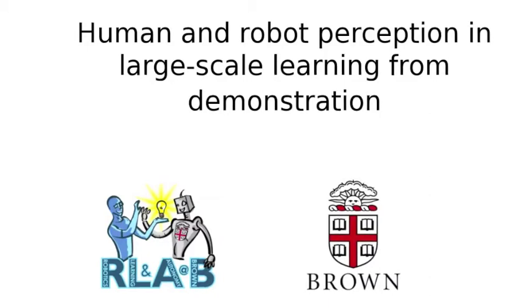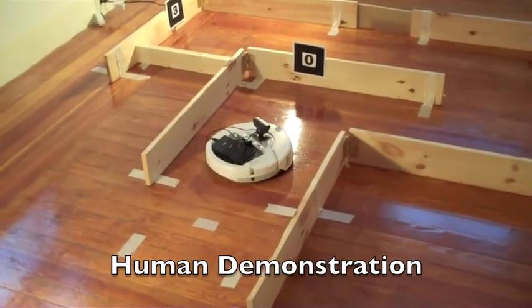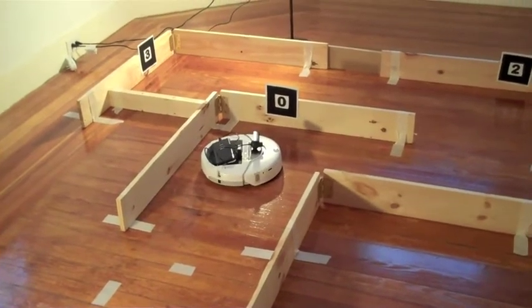In order for a robot to learn from human demonstration, it must be able to understand what the human is showing it how to do. This can be difficult because a robot cannot interpret sensory data anywhere near as well as a person can.